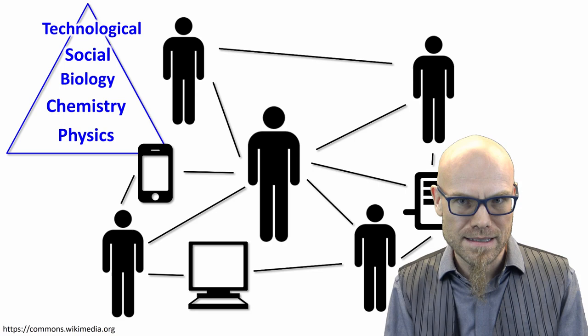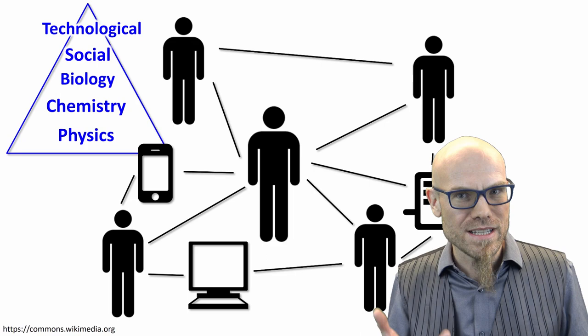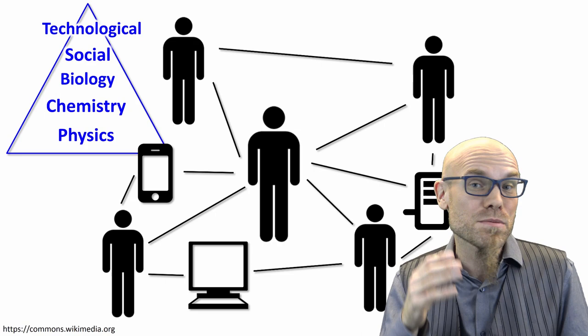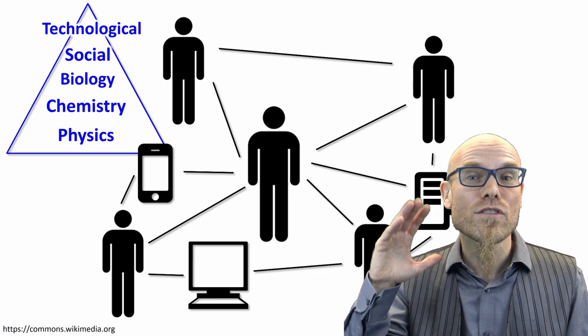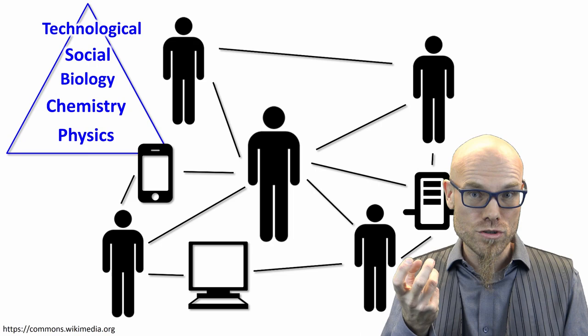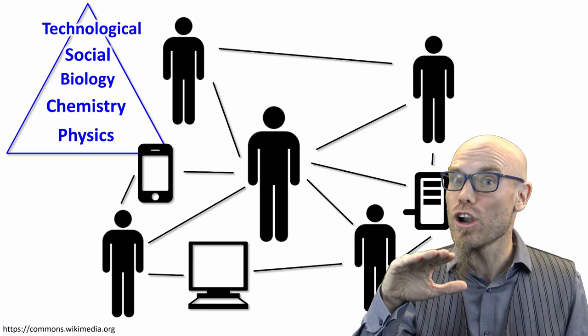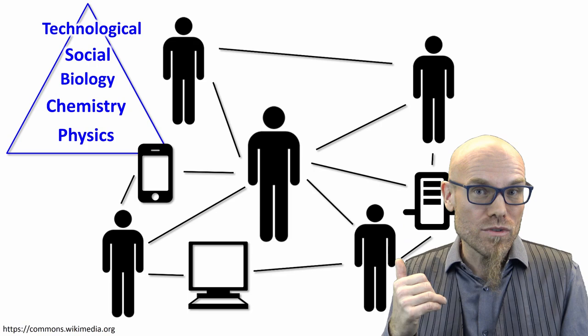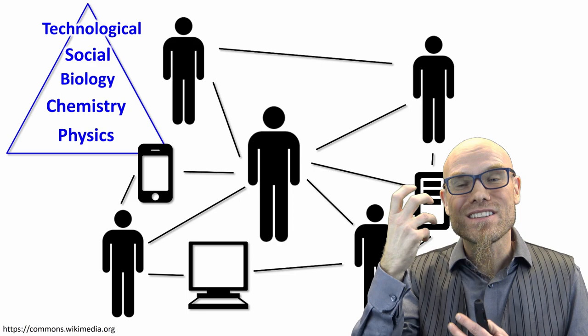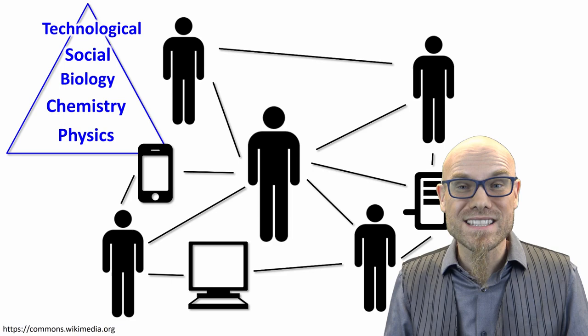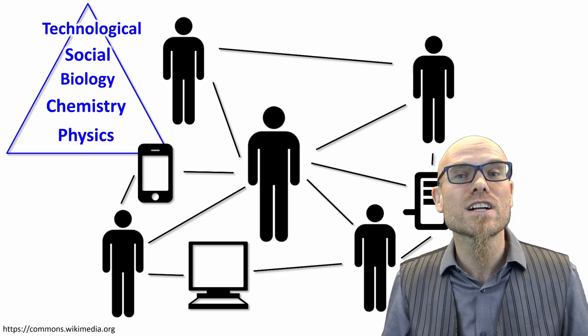Chemistry is not applied physics, biology is not applied chemistry, and social science is not applied biology. On each level, new laws emerge that we can study — you can specialize on that level. The interesting thing is you don't really have to know all the details of the lower levels. The socio-technological system is based on all of them, which makes it extremely complex — a lot of moving parts — and that makes it so difficult to make predictions in the social sciences.